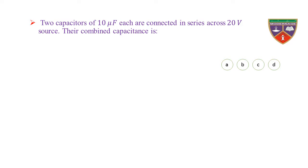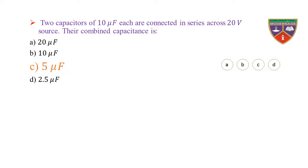Two capacitors of 10 microfarad each are connected in series across a 24V source. Their combined capacitance is — option A: 20 μF, option B: 10 μF, option C: 5 μF, option D: 2.5 μF. The key is 5 microfarad. The correct option is C.